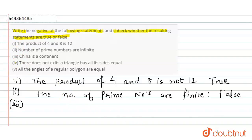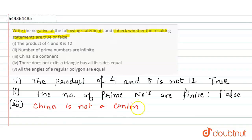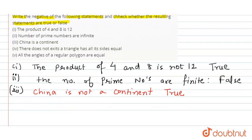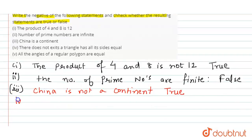Let's move on to the third part. The original statement is: China is a continent. So the negation will be: China is not a continent. This negated statement is true and valid.